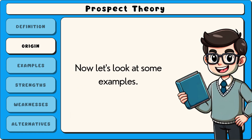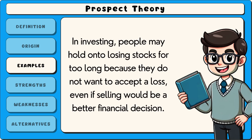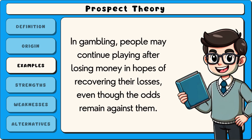Now let's look at some examples. In investing, people may hold on to losing stocks for too long because they do not want to accept a loss, even if selling would be a better financial decision. In gambling, people may continue playing after losing money in hopes of recovering their losses, even though the odds remain against them.